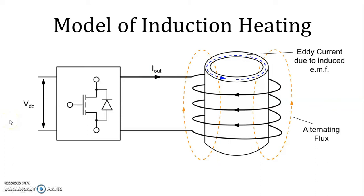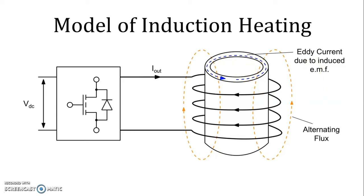We normally have AC supply, so we get DC supply converted from the AC supply. Then we use an inverter. Very high frequency AC supply is generated through the inverter and then we give current to the coil. When current passes through the coil, alternating flux is generated, and in the metal or job, eddy current will pass due to induced EMF. This eddy current loss will be used for the heating treatment.